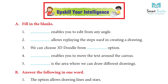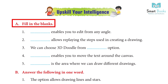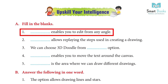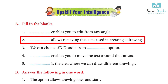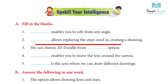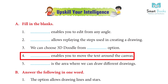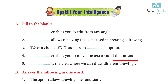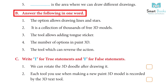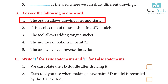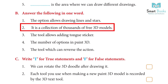Upscale your intelligence. A. Fill in the blanks. 1. Dash enables you to edit from any angle. Answer: 3D View. 2. Dash allows replaying the steps used in creating a drawing. Answer: History slider. 3. We can choose a 3D doodle from the Dash option. Answer: Paint 3D. 4. Dash enables you to move the text around the canvas. Answer: 3D text. 5. Dash is the area where we can draw different drawings. Answer: Canvas. B. Answer the following in one word. 1. The option that allows drawing lines and stars. Answer: 2D shapes.